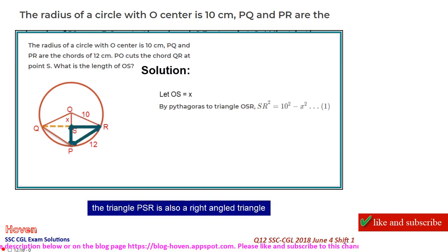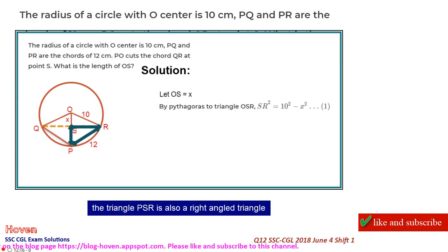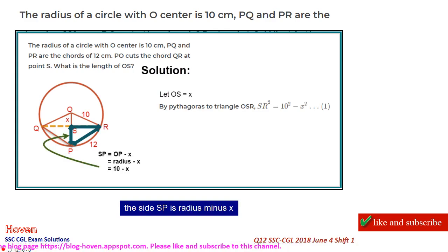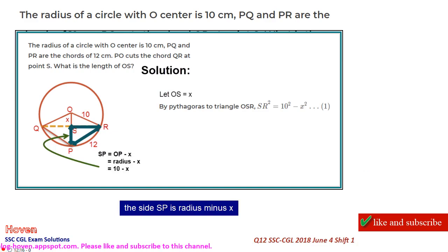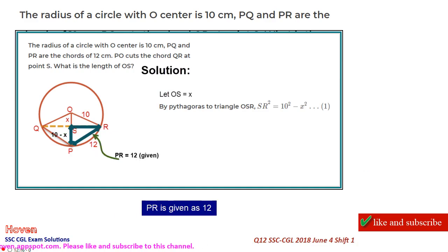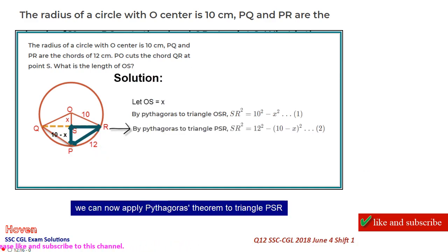Triangle PSR is also a right-angled triangle. The side SP is radius minus x, and PR is given as 12. We can now apply Pythagoras theorem to triangle PSR.